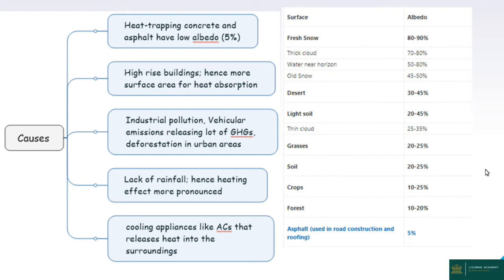Albedo high means there is a lot of material or objects that reflect the sun's radiation — for example, fresh snow, thick cloud, and upper troposphere mirror clouds. Asphalt is used in road construction and roofing. The amount of albedo for asphalt/concrete is around 5%, which is very low. This heat-trapping by concrete and asphalt having low albedo effect — around 5% — is one of the main reasons for the heating effect in urbanized areas.